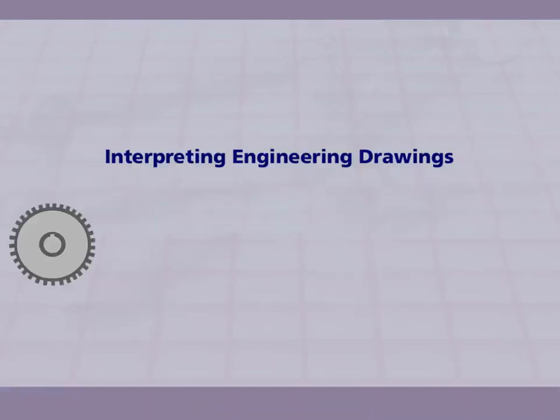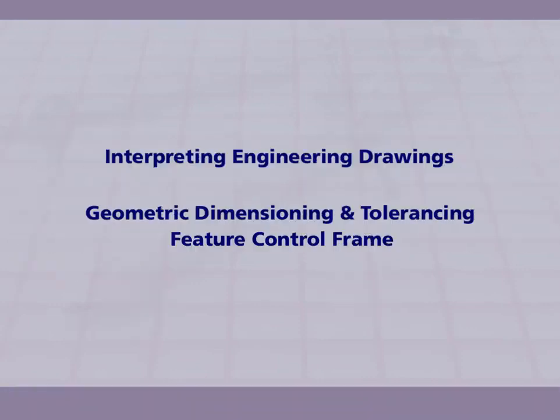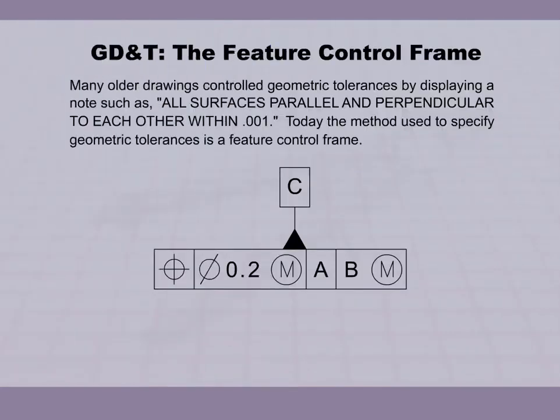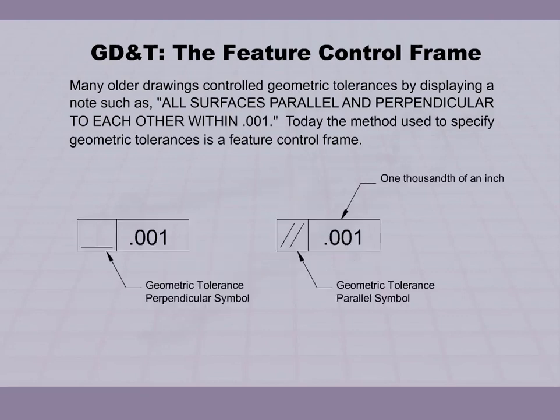Interpreting Engineering Drawings: Geometric Dimensioning and Tolerancing - The Feature Control Frame. Many older drawings controlled geometric tolerances by displaying a note such as 'All surfaces parallel and perpendicular to each other within .001.' Today the method used to specify geometric tolerances is a Feature Control Frame.